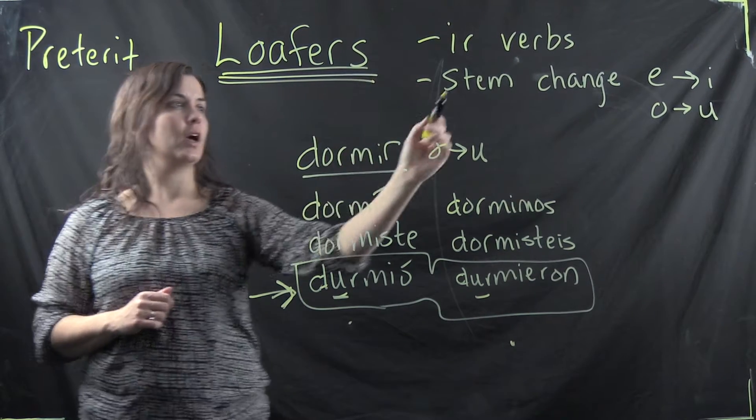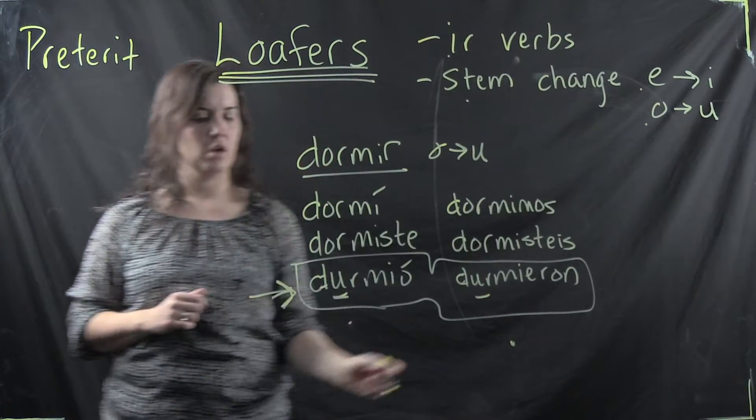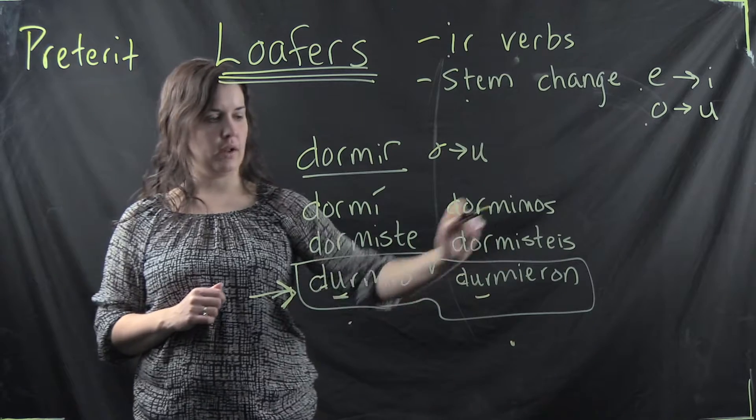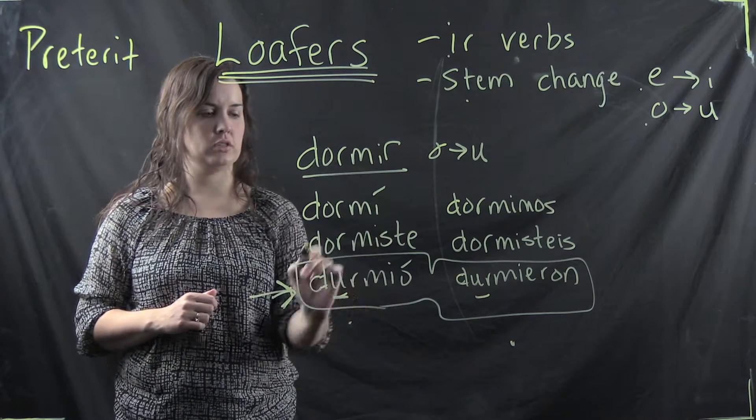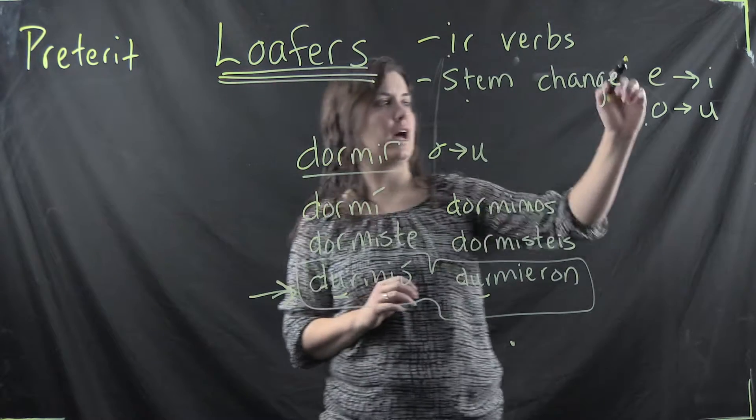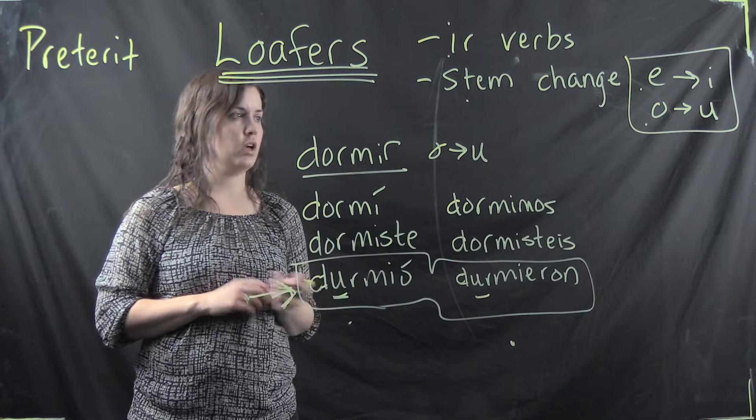Is everyone following? IR verbs stem change from either E to I or O to U but it only happens in the third person, therefore when you draw around it it doesn't look like a boot like with your present tense, it looks like a loafer. Okay so again you have two possible stem changes E to I and O to U. Okay dormir is an example of the O to U.